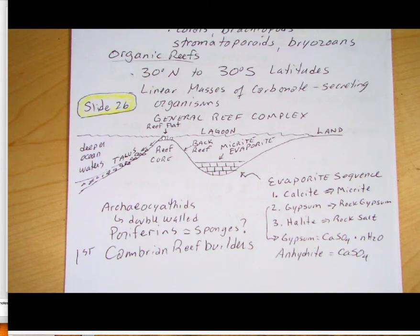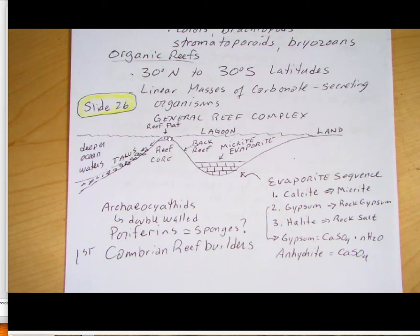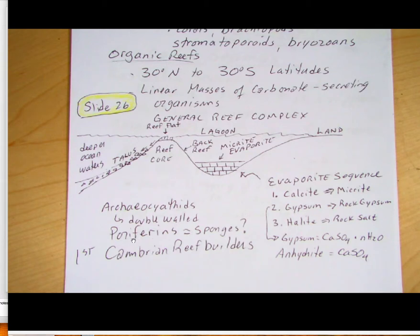There'll be a back reef and a reef core, with a flat area on top of the reef. Usually we find a very blocky, angular slope of broken rocks making breccias — we call that the talus apron — and then the deeper ocean waters beyond. We find these reef systems in the Michigan Basin and down in the Permian of West Texas in the Guadalupe Mountains. The first organisms to anchor a reef were the archaeocyathids, related to sponge phylum Porifera but secreting calcium carbonate with a double wall — the first Cambrian reef builders.